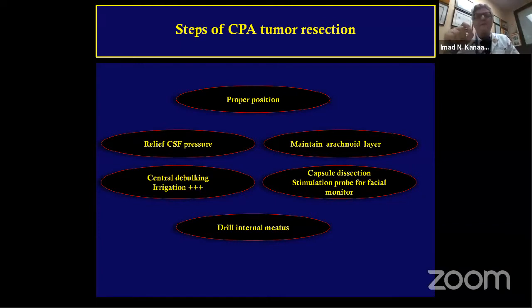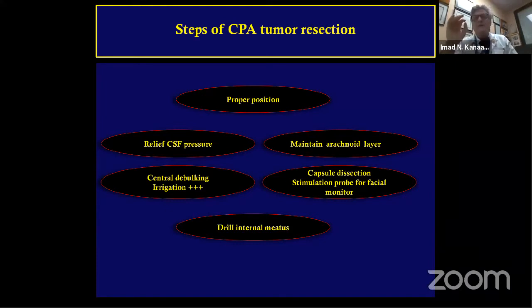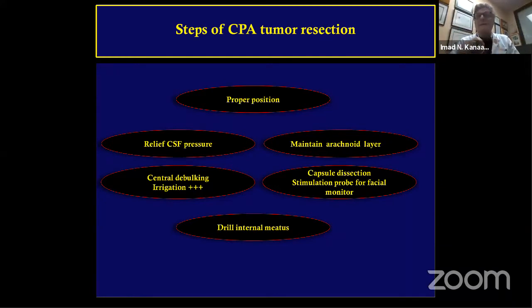We use low-power dissection, especially when near the nerve, allowing dissection simultaneous with monitoring. This malleable dissector is fantastic — like a Rosen dissector.